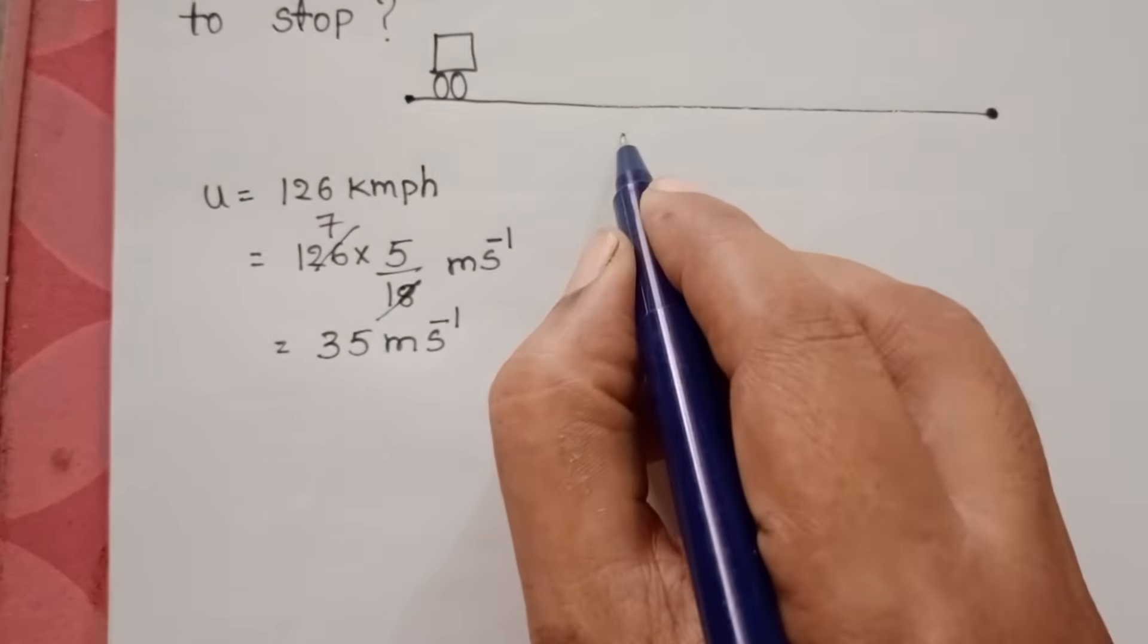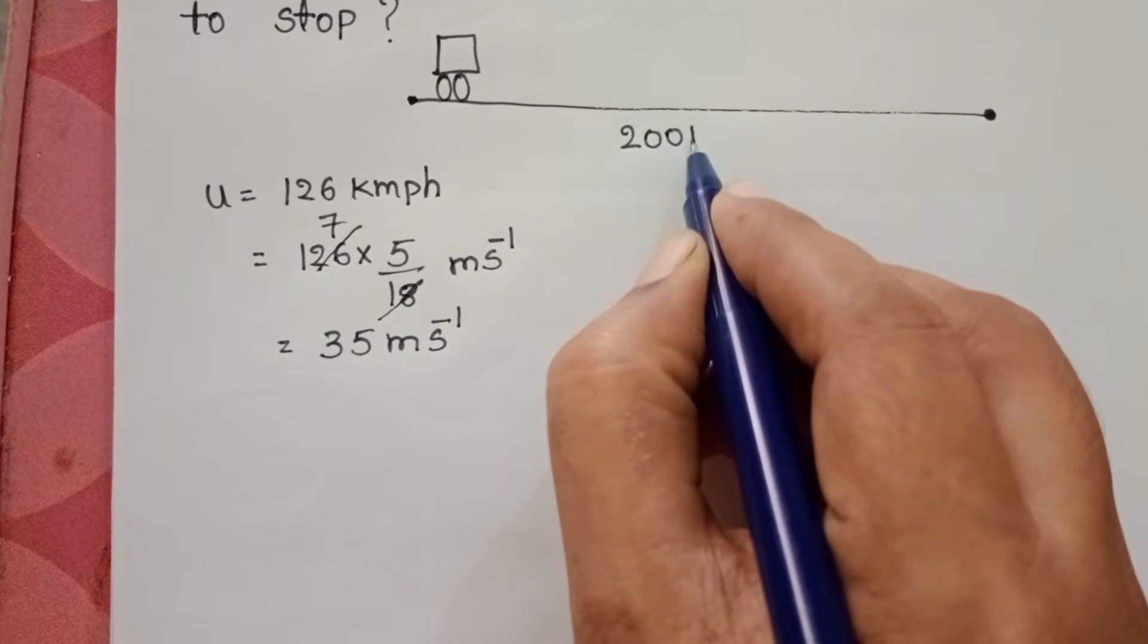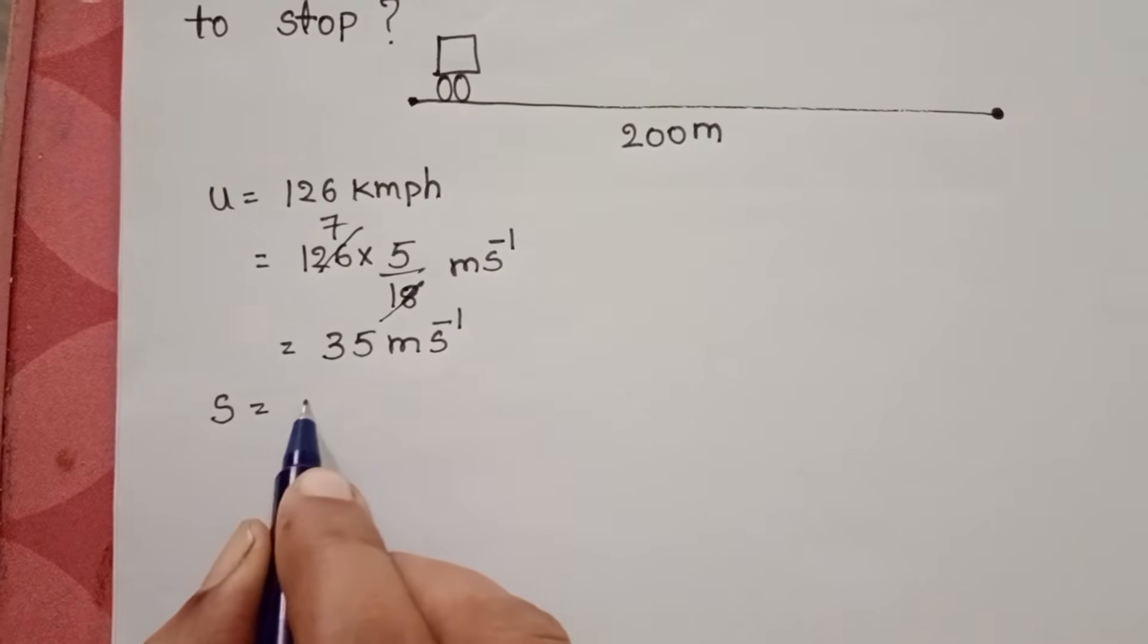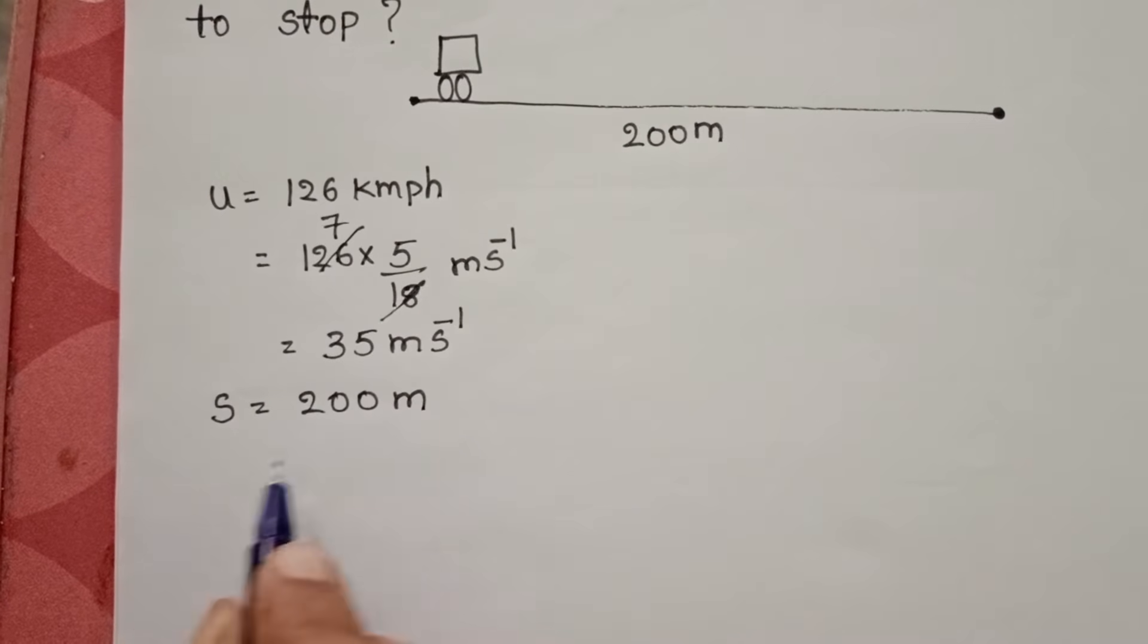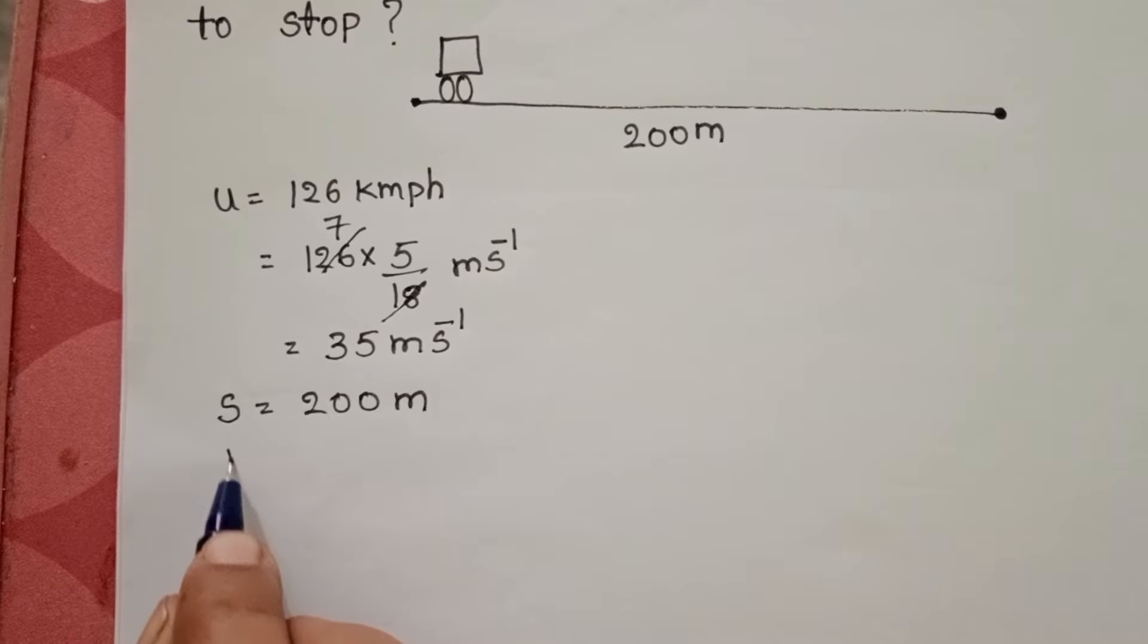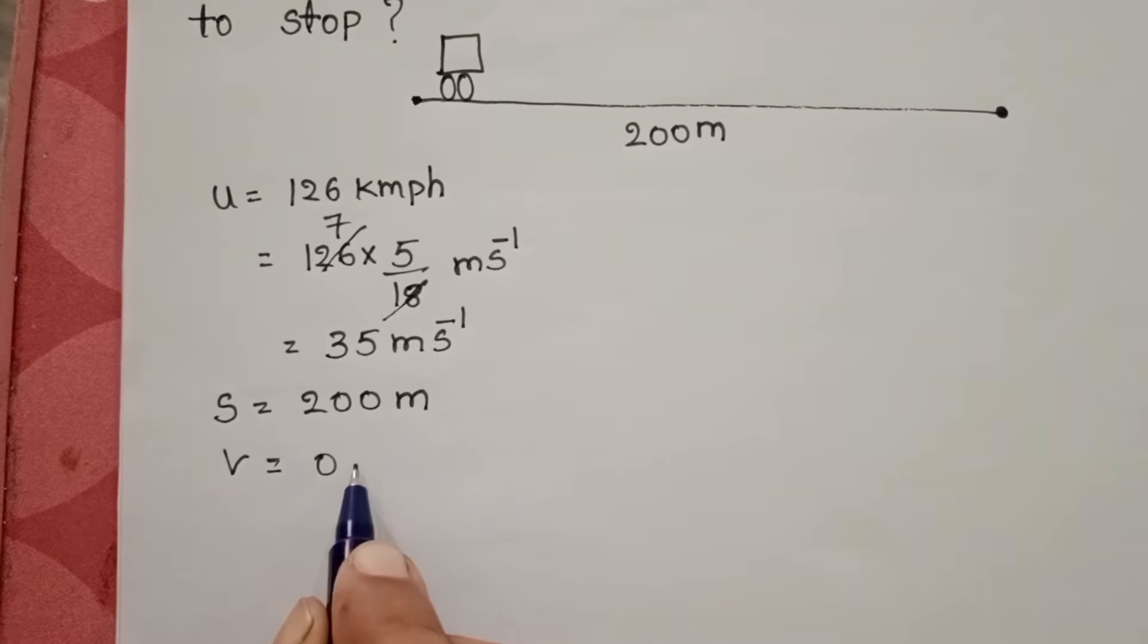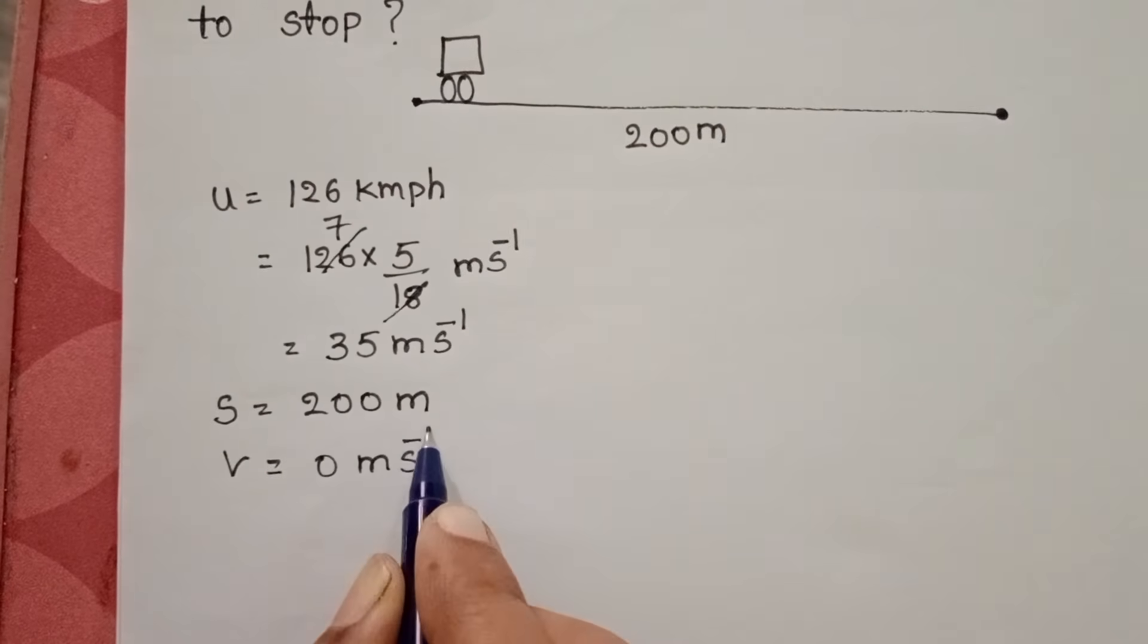And after travelling a distance of 200 meters, the car comes to rest position. Distance travelled by the car before coming to rest is 200 meters and final speed of the car is 0 meter per second.